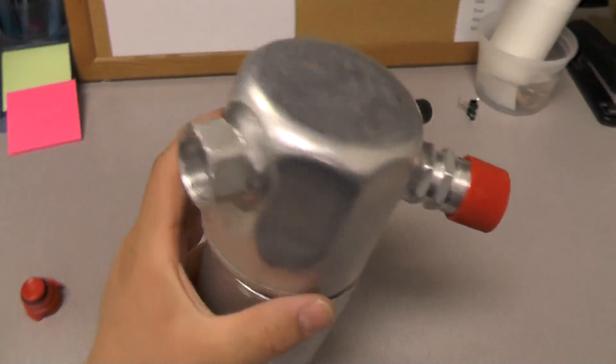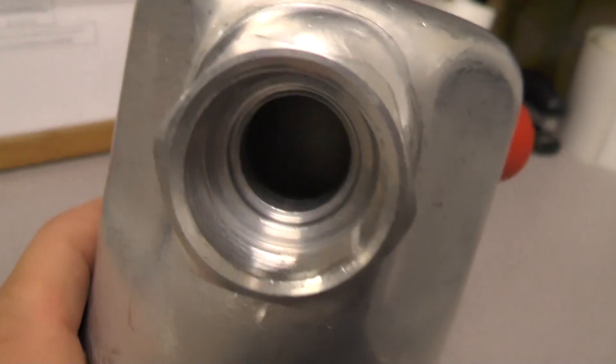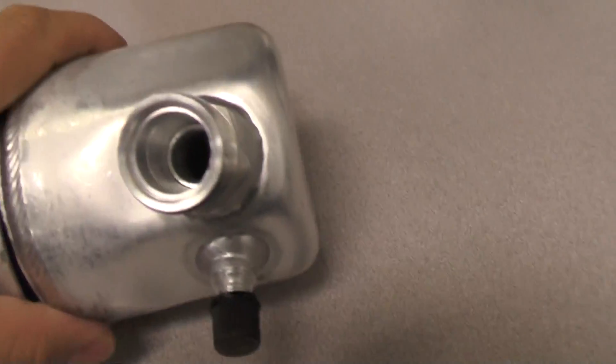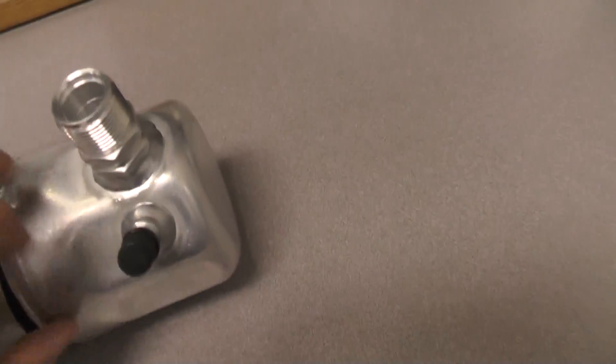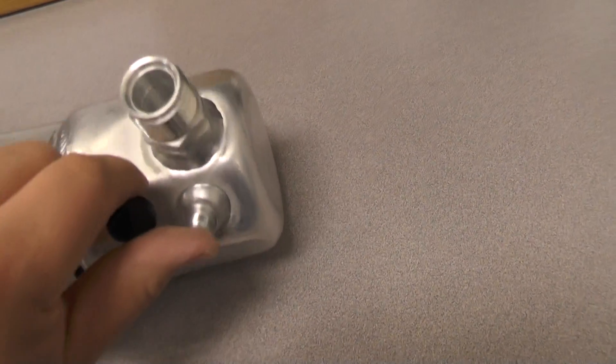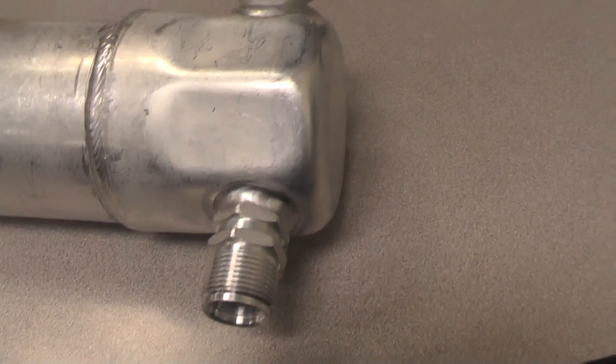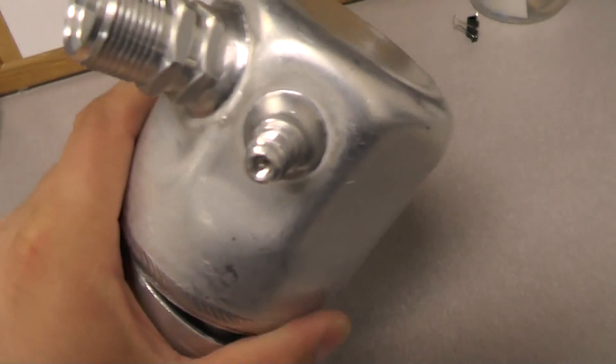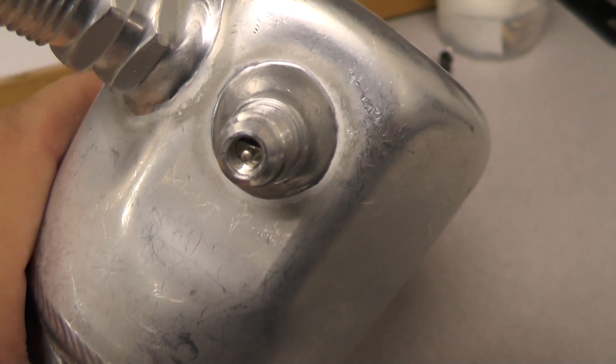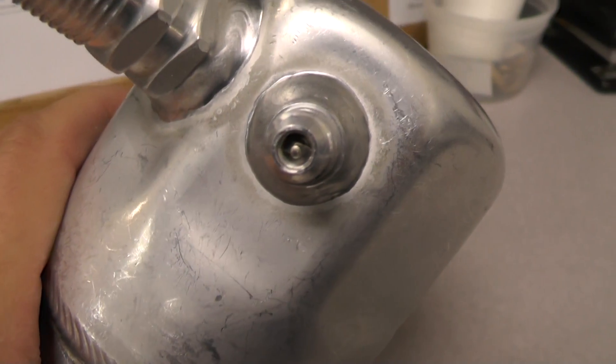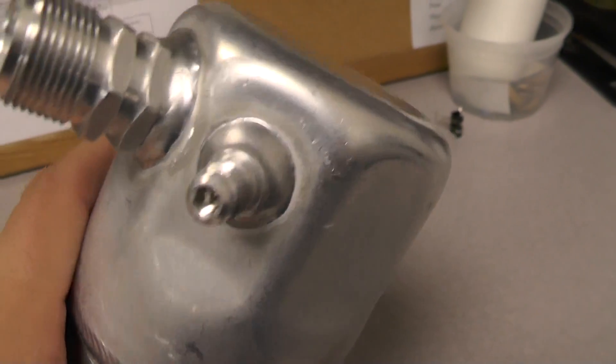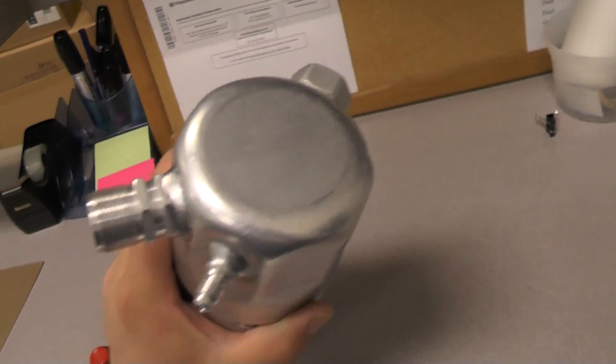It's got an input port there. And this one is the output port. And then this one here is either going to be used for connecting your low side hose or gauge connector, or it could be used for the low pressure cycling switch, depending on what vehicle it's being installed in.